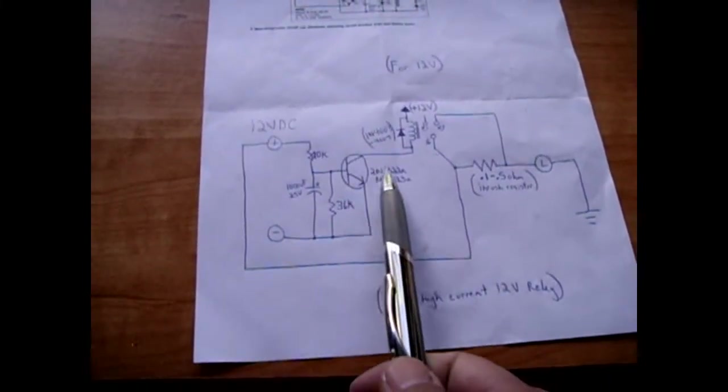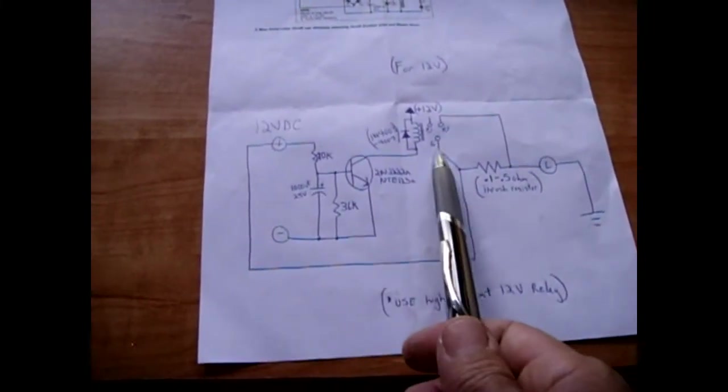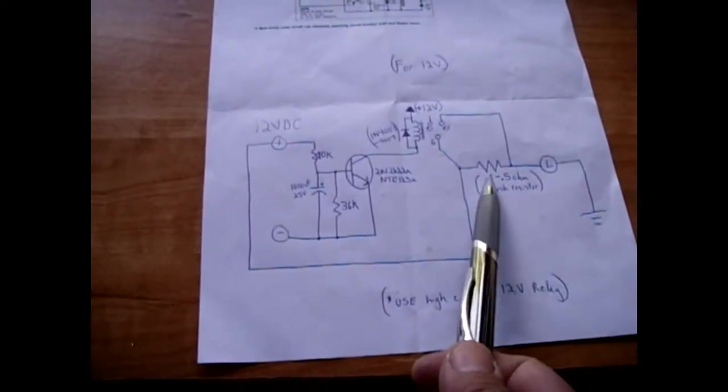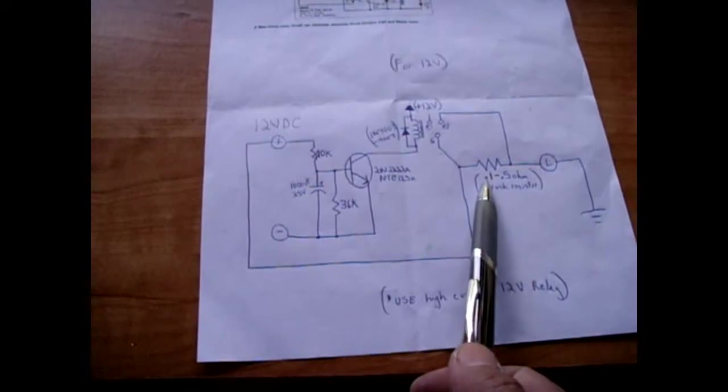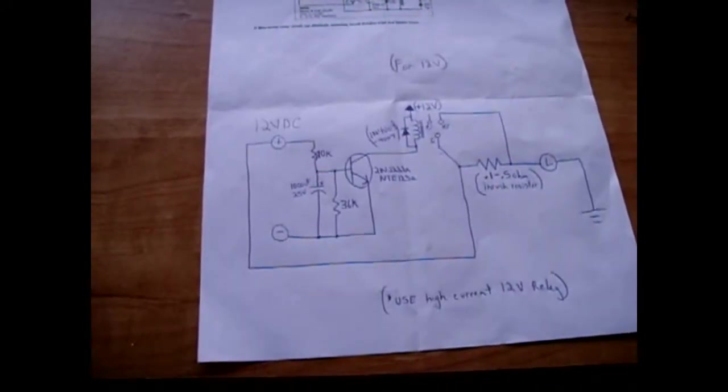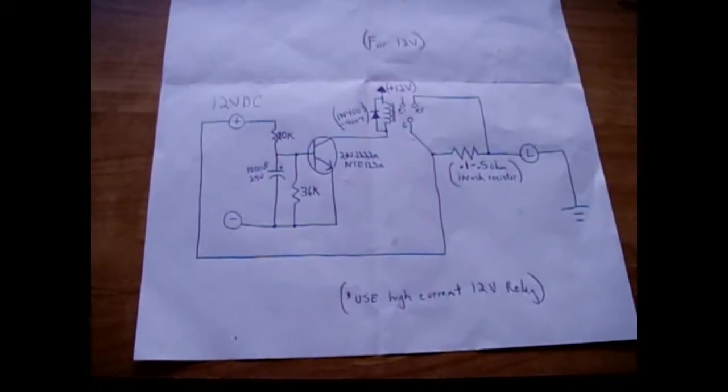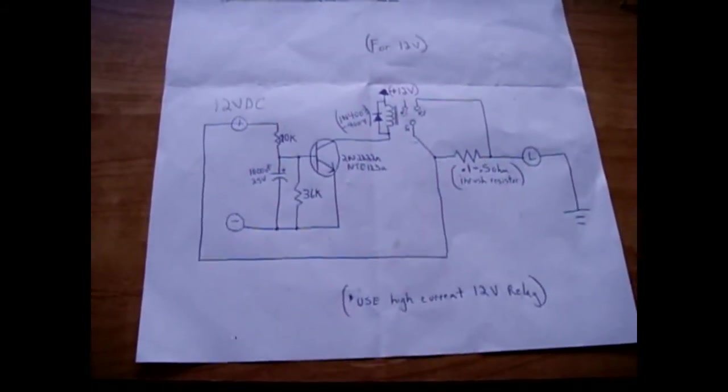If you're dealing with 20 or 30 amps or 40 amps, all you're going to need is just a large relay that can handle the current and a very high wattage low ohm resistor. Then you just made a very effective inrush limiting circuit.